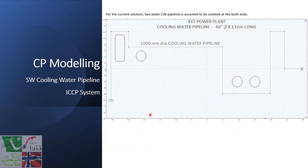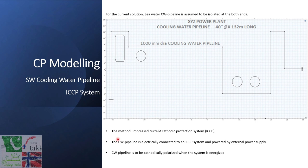For the current solution, the seawater pipeline is assumed to be electrically isolated at both ends. The pipeline is 132 meters long with a 40-inch diameter. The method is based on the impressed current cathodic protection system, where the cooling water pipeline will be electrically connected to an ICCP system and powered by an external power supply.